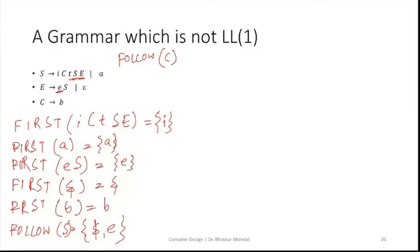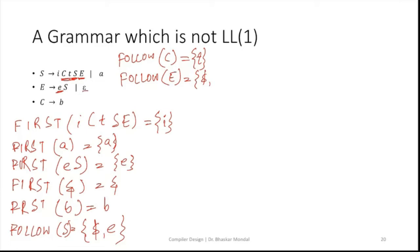For FOLLOW of C: C is followed by T then E, so no issue there. Then E is at the end of the starting production rule, so it will have dollar in the FOLLOW definitely. Any other places where E can arrive — I don't see any.